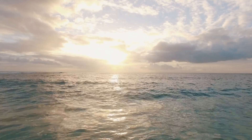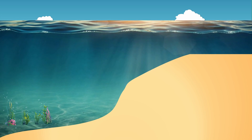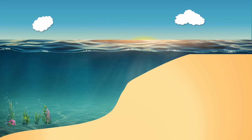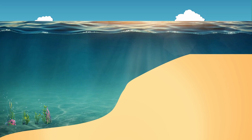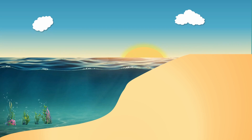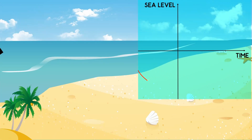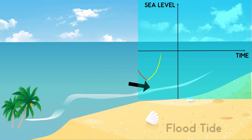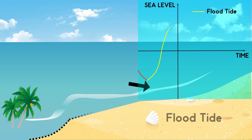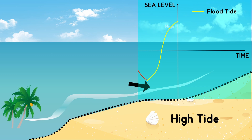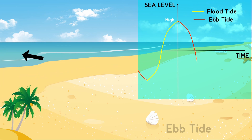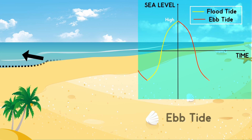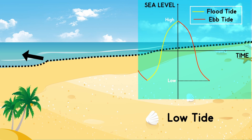We all know that sea level is not constant. Sometimes it rises and sometimes it falls. This phenomenon that makes the water either go up or down is known as the tide. The incoming tide is called the flood tide and when it reaches its highest level, it is called the high tide. The outgoing tide is called the ebb tide and when it reaches its lowest level, it is called the low tide.